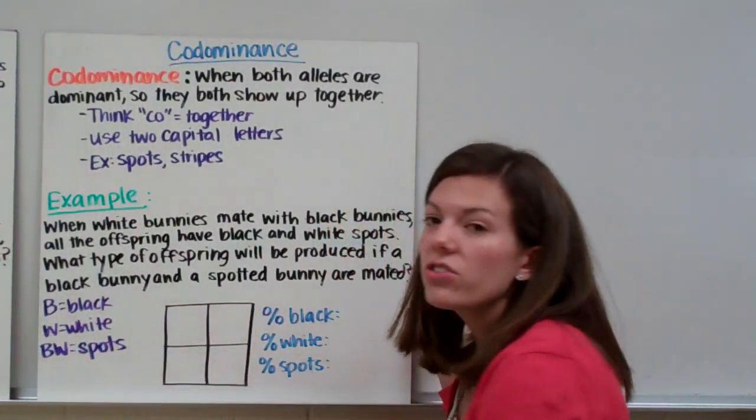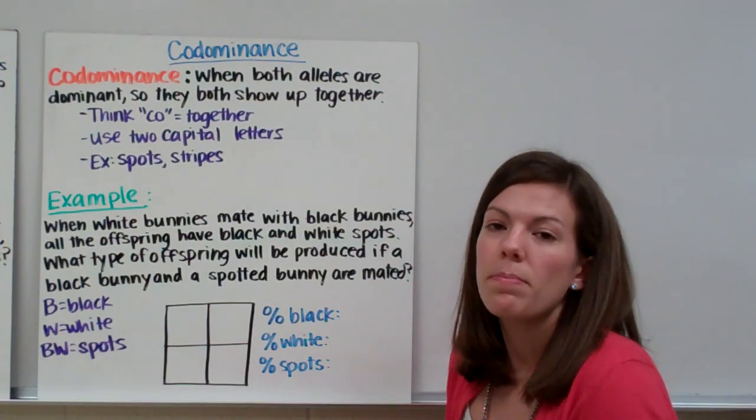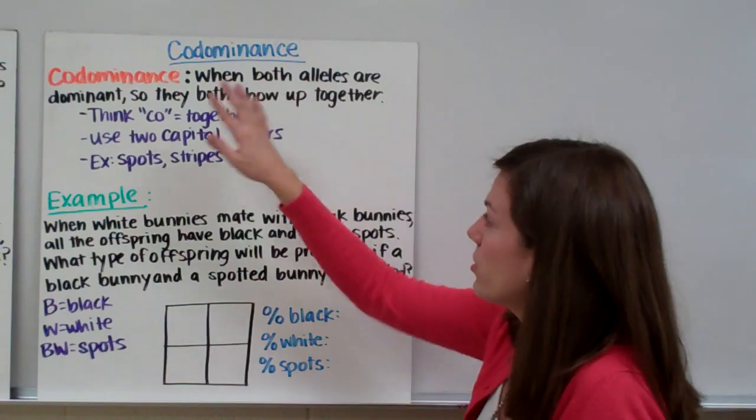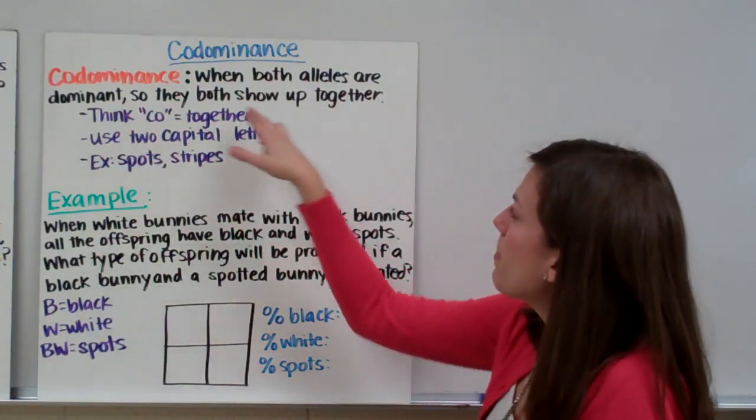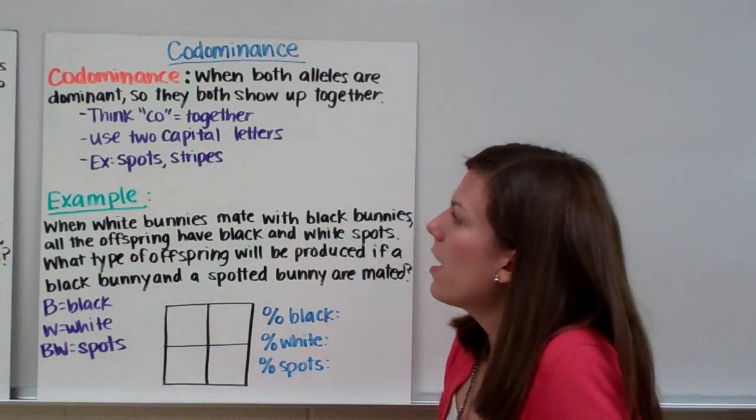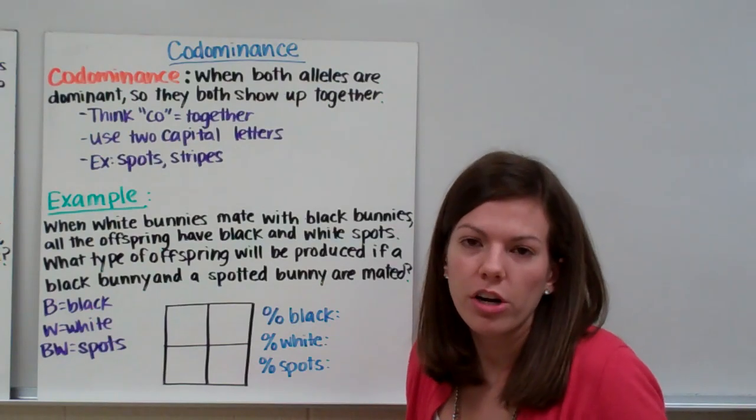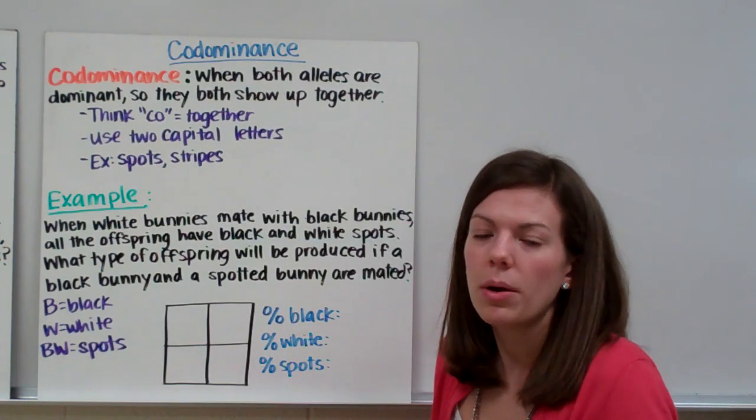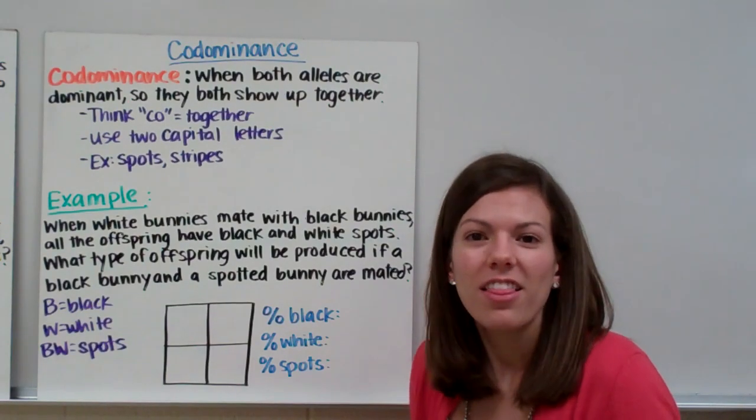Next, we're going to discuss codominance. Codominance is when both alleles show up - both alleles are dominant, so they both show up together. Just like a coworker is somebody you work together with, codominance is when your alleles show up together. Whenever you see co, think together.